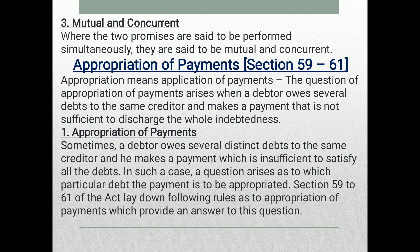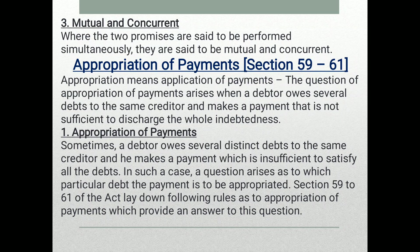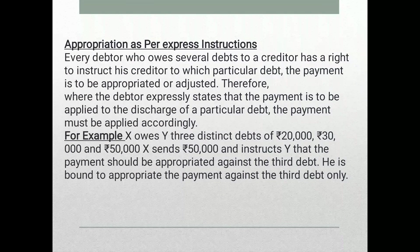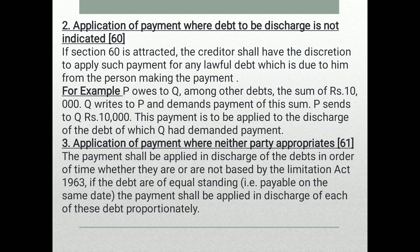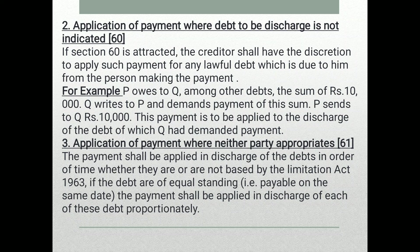Appropriation of payments — Sections 59 to 61. Appropriation means the application of a payment. The question of appropriation of payment arises when a debtor owes several debts. Under Section 59, as per the debtor's instructions, the payment is applied to specific debts. When no indication is given by the debtor, the creditor may apply the payment. Up to this point, the lesson on agreement and contract performance has been completed. Thank you all.